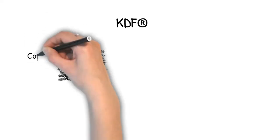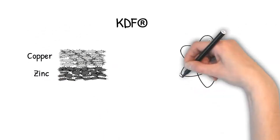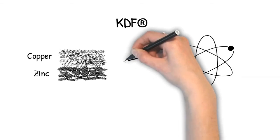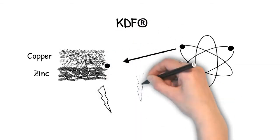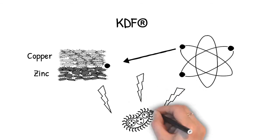KDF is a highly effective filtration process using an exact combination of highly purified copper and zinc that exchanges electrons with contaminants as they pass, changing them into something else. This process creates a microscopic electrical storm that kills microorganisms, but even that solution is limited.